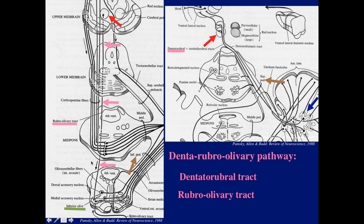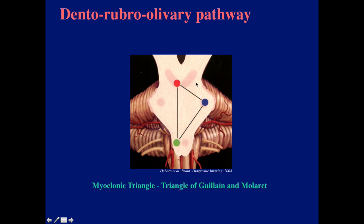These are the two major tracts, and this communication is via the inferior and superior cerebellar peduncles. This is a simplified picture called the myoclonic triangle — the triangle of Guillain and Mollaret — named after French neurologists. Here we see the dentate, then the crossing to the other side at the red nucleus, and then the inferior olive.